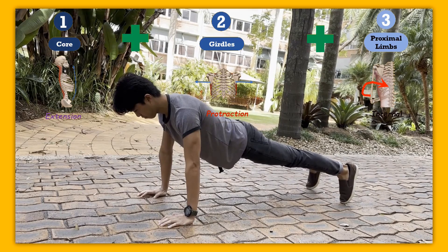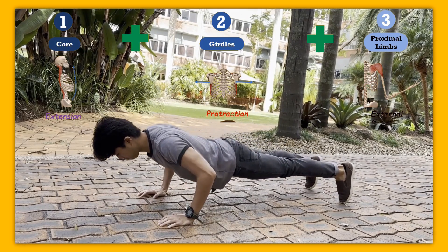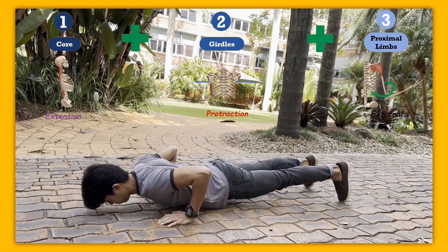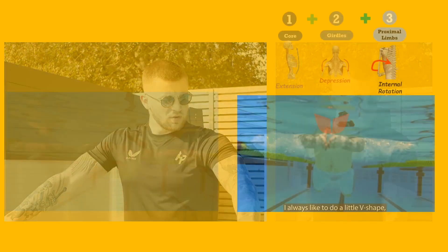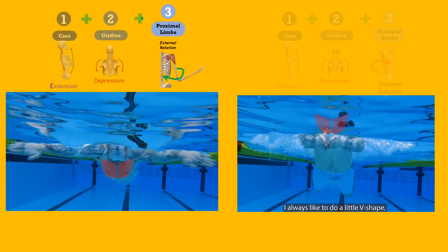Let's walk one more step backward to analyze the beginning of the pull. If you remember our push-up video, we control the stretch-shortening cycle by manipulating level 3. The same concept holds true for swimming. Before shortening into this position, a prior stretch occurs during the catch phase because of external rotation.